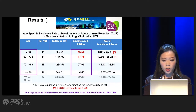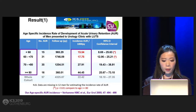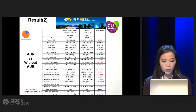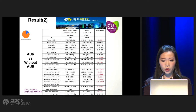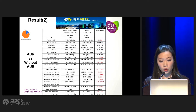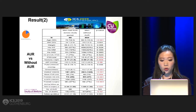The age-specific incidence rate of development of acute urinary retention is about the same as those previously reported in the literature. When we stratified patients according to those who had retention versus those without, the factors differed by age — men with older age had more retention — as well as those with more occurrences of nocturia, higher blood pressure, and a smaller prostate volume had more acute urinary retention.